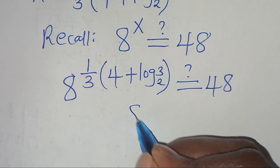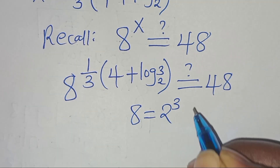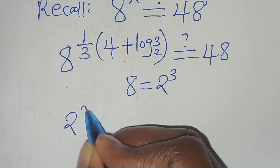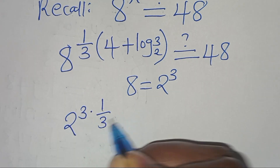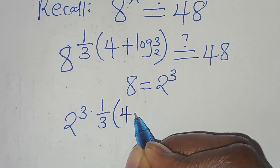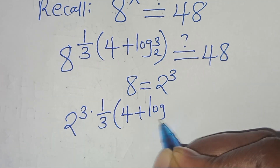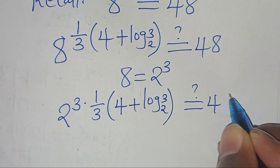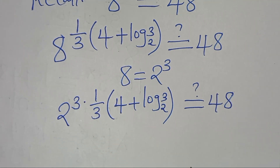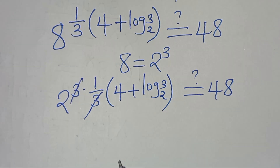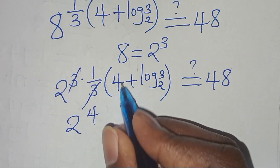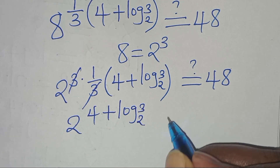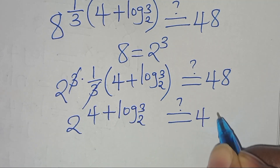We express 8 as 2³, so we have 2 to the power of 3 × (1/3) × (4 + log₂(3)), which should equal 48. Simplifying 3 and 3, we get 2 to the power of (4 + log₂(3)), which should equal 48.